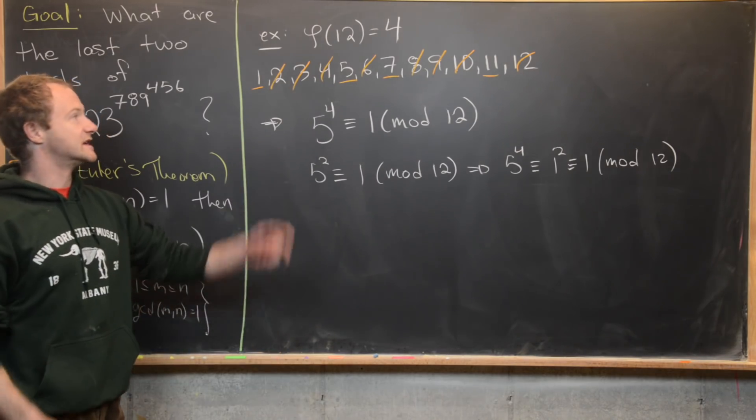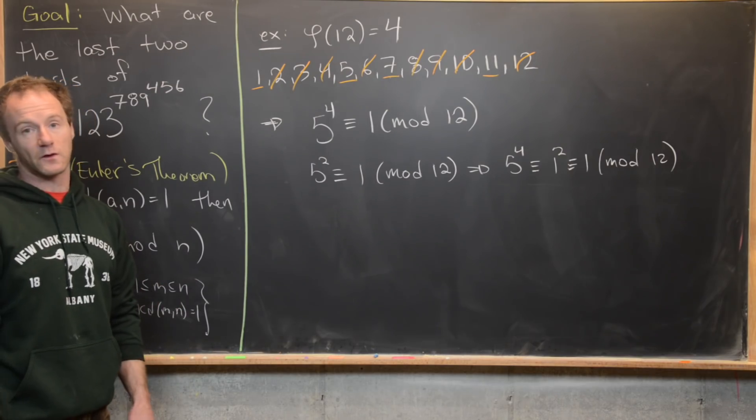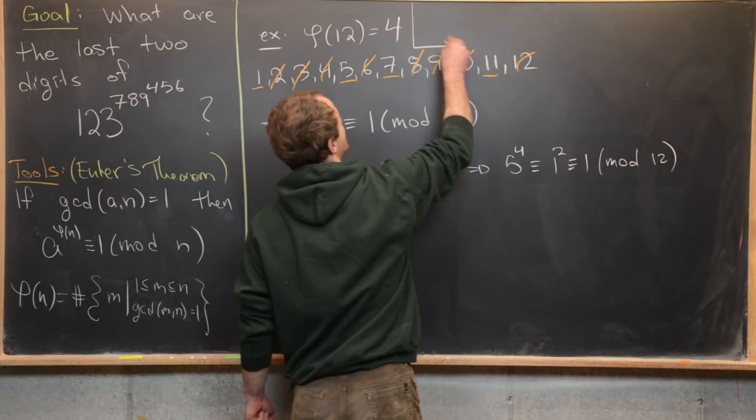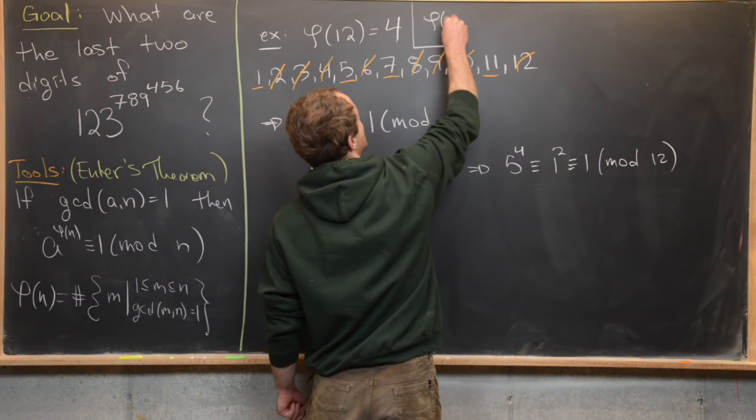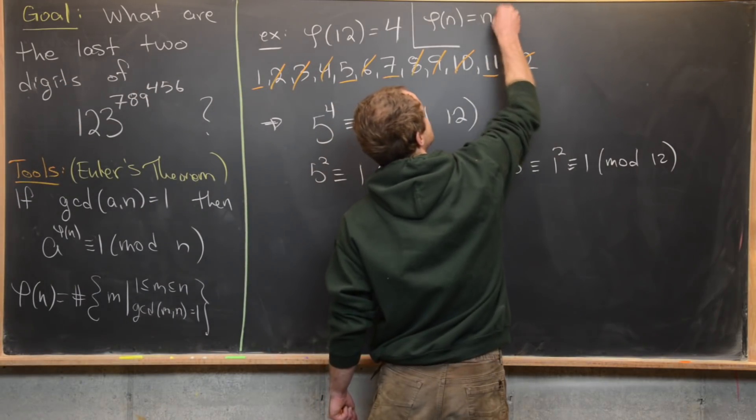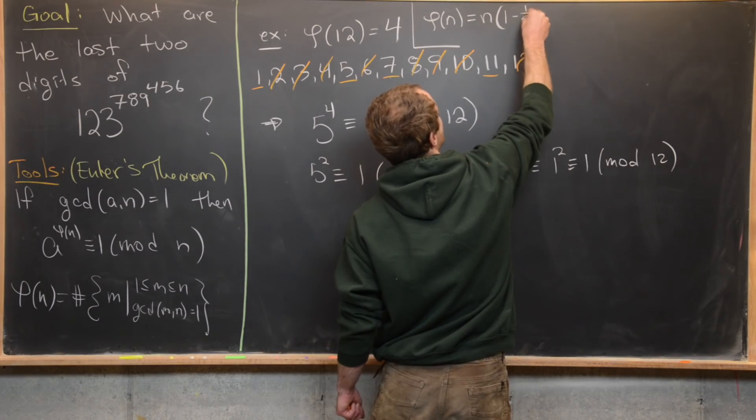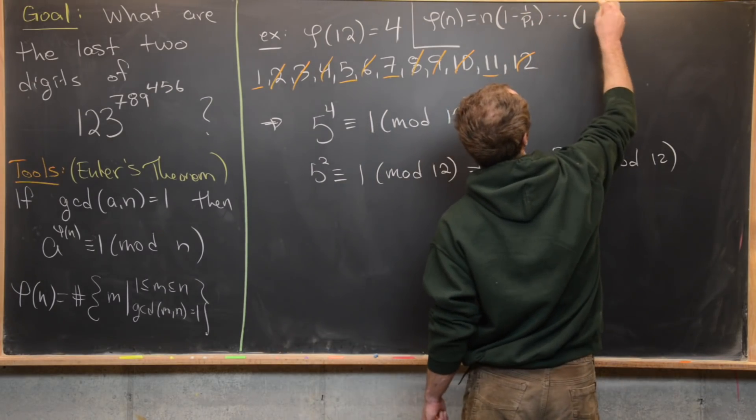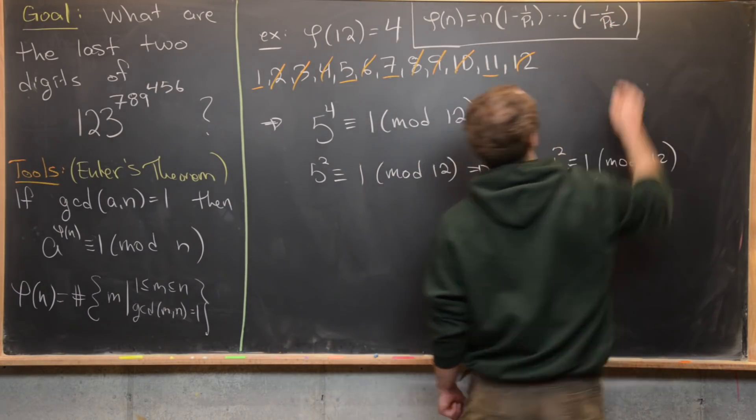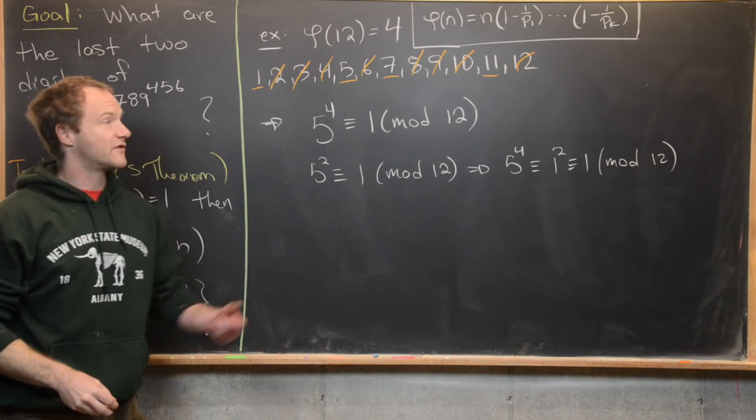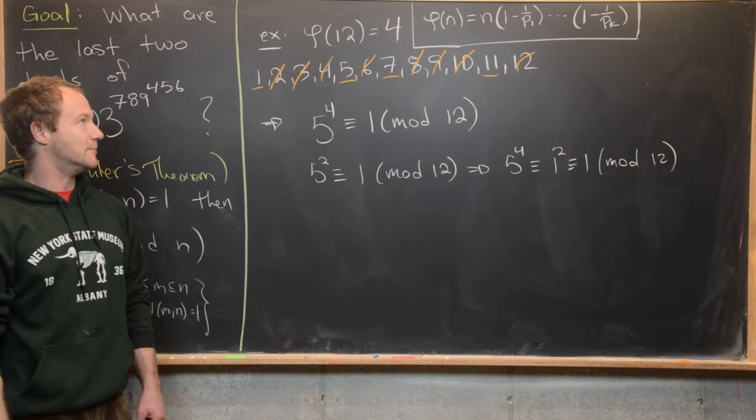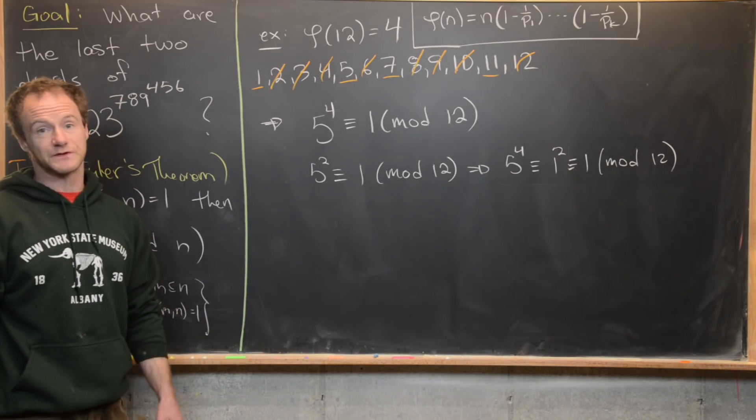The next thing that I want to do is notice that we have a nice formula for Euler's totient function, and we can just write it down. Maybe I'll fit it in right here. So phi of n has the following form. It's going to be n times 1 minus 1 over p sub 1, all the way up to 1 minus 1 over p sub k, where those p i's are all of the prime divisors of n. So via this formula, we can calculate phi of a bunch of numbers very easily.